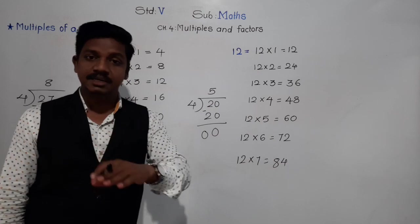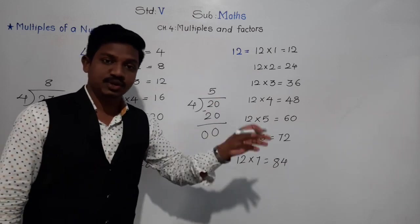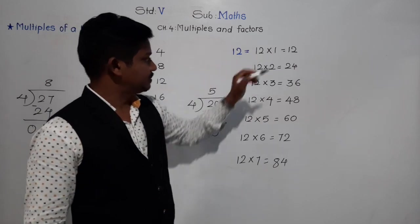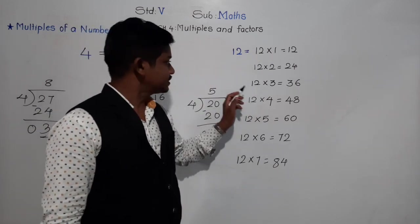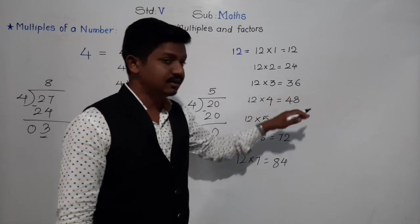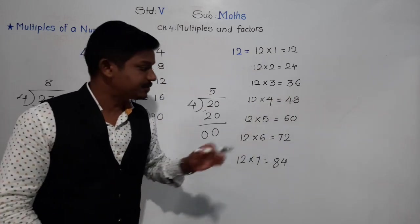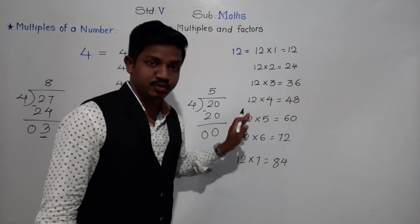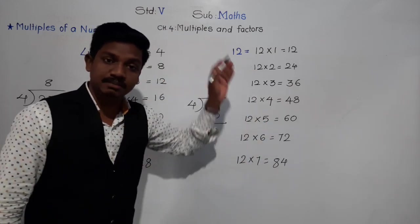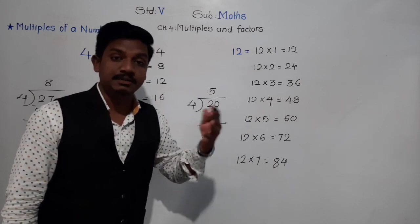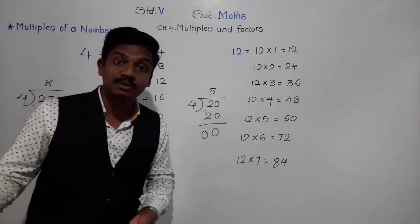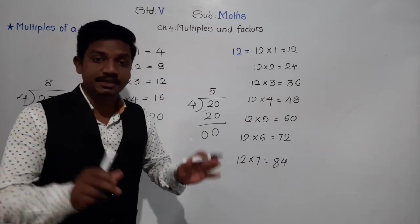For example, to find the fifteenth multiple of 12, we multiply 12 by 15. The fourth multiple of 12 means 12×4 = 48. The fifth multiple of 12 is 12×5 = 60. Whenever we have to find multiples, we will be told which specific multiple to find — first, second, hundredth, one thousandth.